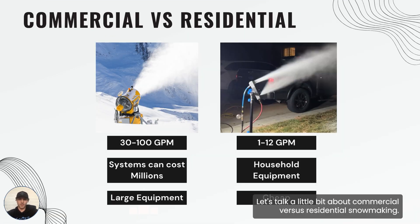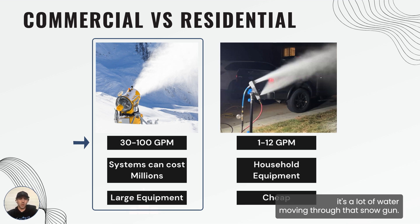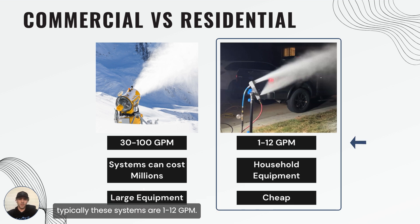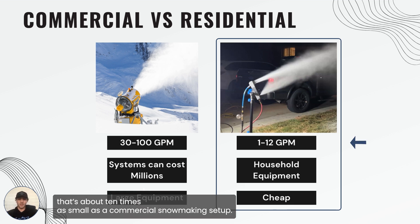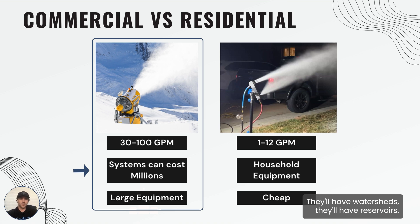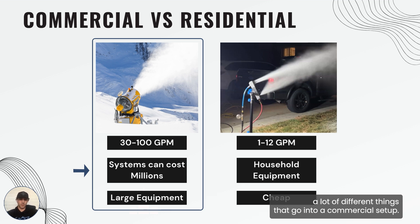There are a lot of differences between commercial and residential snowmaking. The main one is water flow or snow output. With a commercial system, they're typically somewhere between 30 to 100 gallons per minute of water flow per snow gun — a lot of water due to the high snow output needs of resorts. Residential systems are limited by available power and home water output, typically 1 to 12 GPM — about 10 times smaller than commercial. Commercial systems can cost millions of dollars, with large pumps, watersheds, and reservoirs, requiring major infrastructure to pump water throughout a mountain.